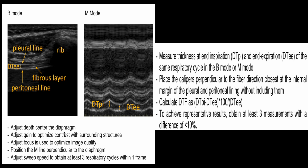Adjust gain to optimize contrast — you will get a more magnified, clearer image of the diaphragm with this approach. Adjust focus to get the best image quality at this level. Then go to M-mode and place the M-mode line perpendicular to the diaphragm, again obtaining at least three sweep cycles in one frame.